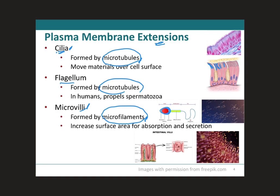Another example of cilia are those that beat on cells in the female fallopian tubes to move egg cells from the ovary towards the uterus, where they will be fertilized. Next, we have the flagellum, which is an appendage much larger than the cilium, specialized for cell locomotion. The only flagellated cells in humans are sperm cells, which propel themselves towards the female egg to fertilize it — we can see all the sperm with their long flagellum in this image.